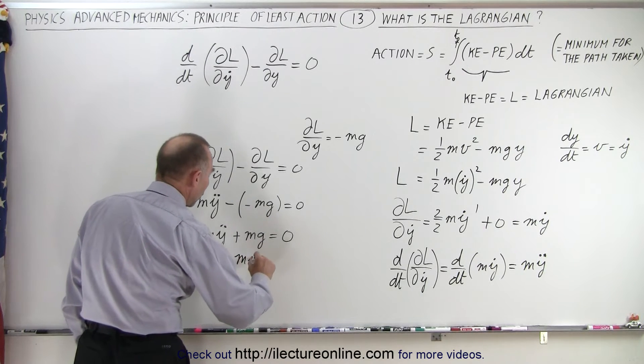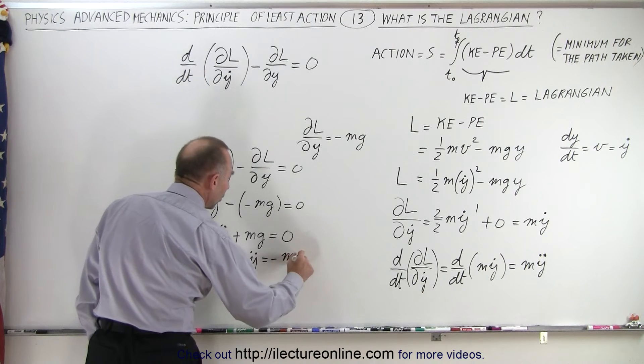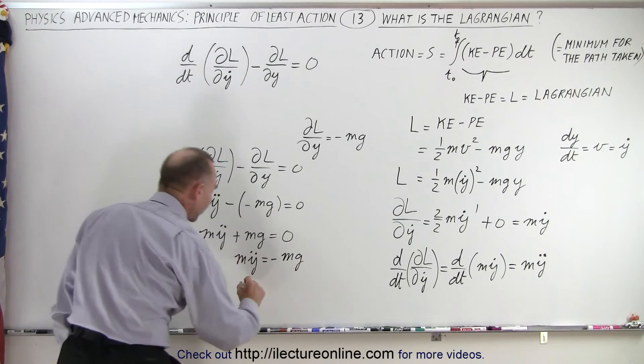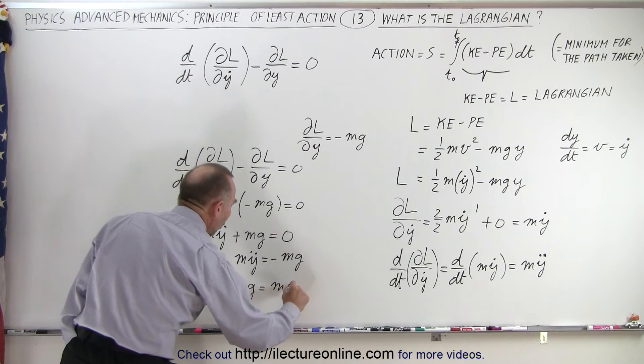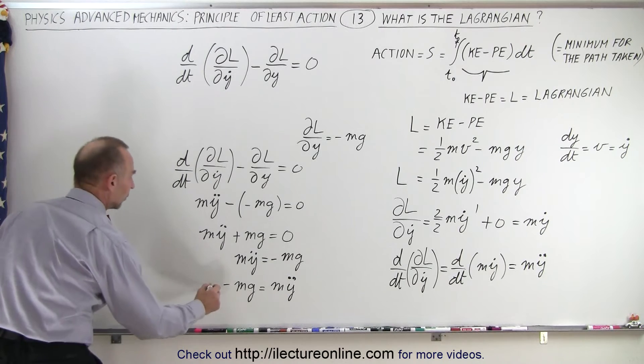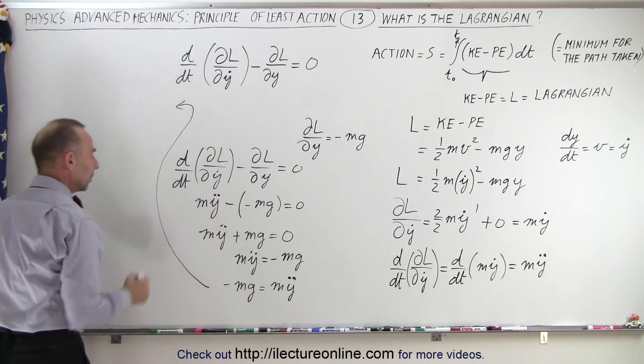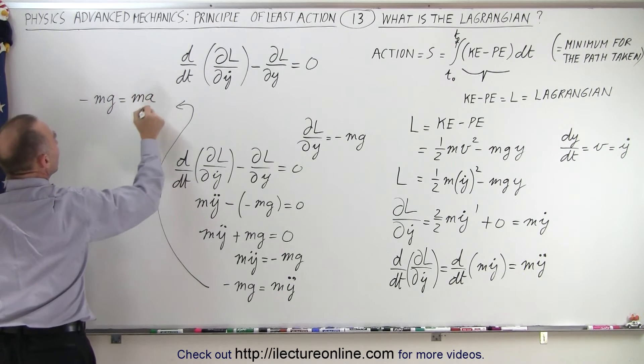We can write this as m y double dot equals minus mg, or I'm going to move that in the front. I'm going to write this as minus mg equals m y double dot, and finally, I'm running out of room here, finally when we come up here, we can write this as minus mg equals to m a.